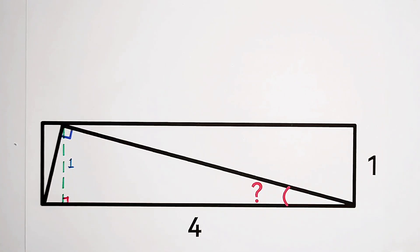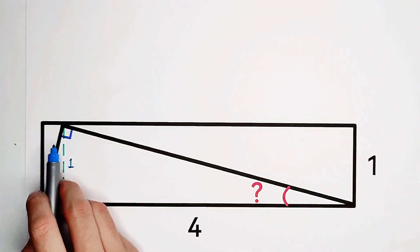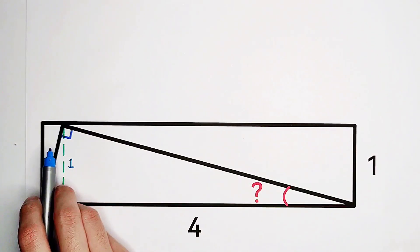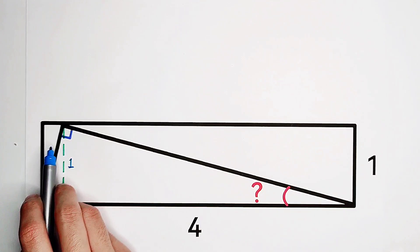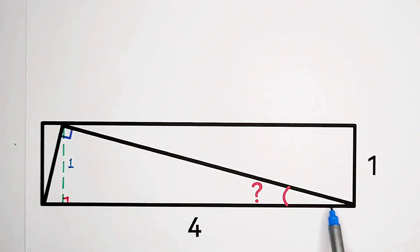So now, what can we do next? Here we have 4. Here we have a right triangle. Now, I'd like to search the midpoint of this 4, of this length. I found it.